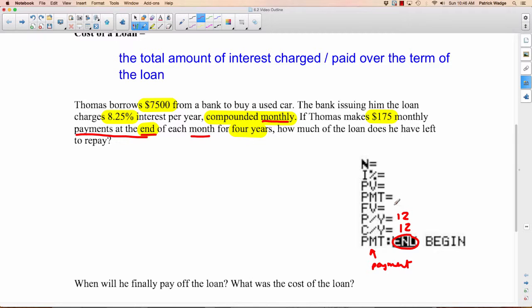The future value, that's what we don't know. I'll put question marks there. The payment—yes, he makes a $175 monthly payment. Now that's money going out, it's out of his pocket, so this is a negative amount because it's leaving his person. PV stands for present value. What's the present value? That's like the principal, $7,500.